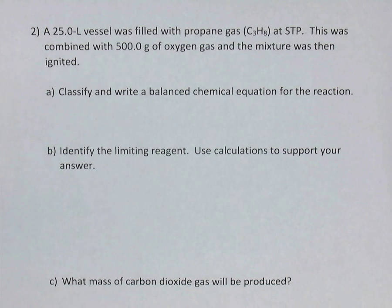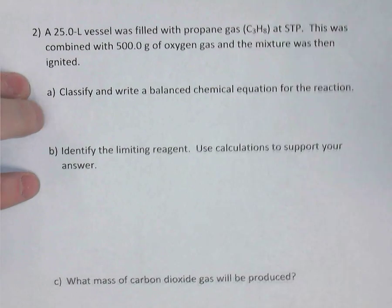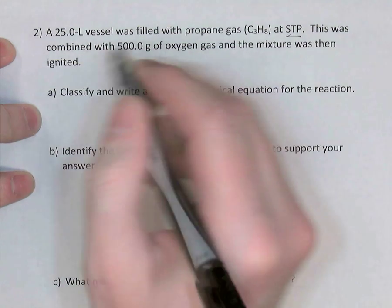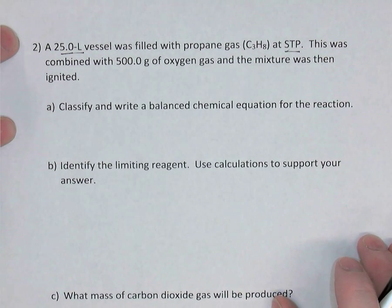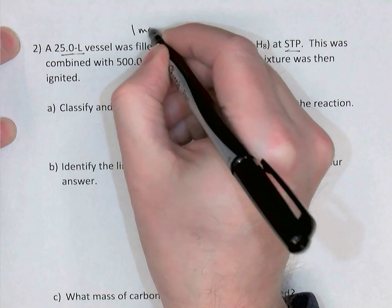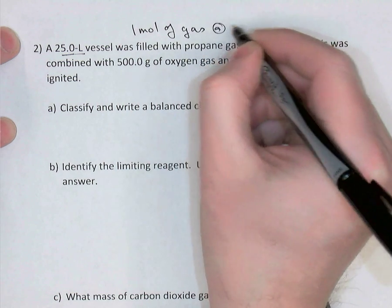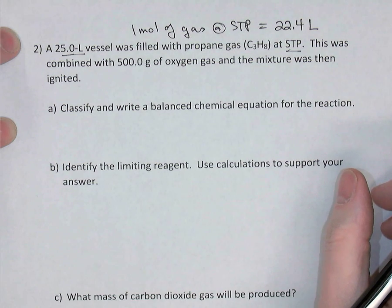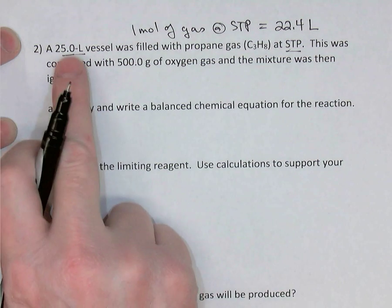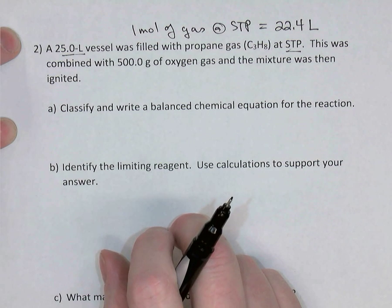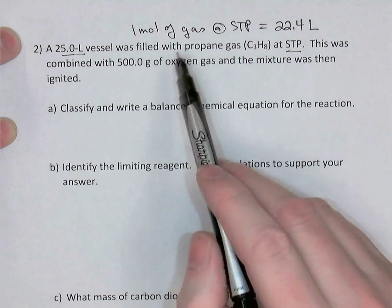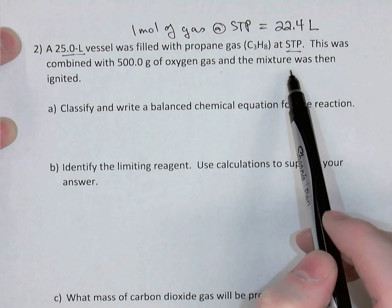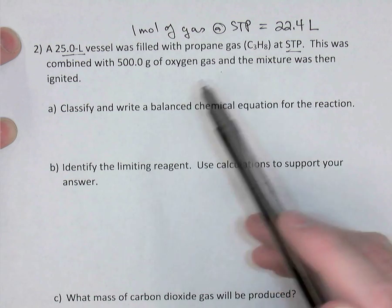A 25.0-liter vessel was filled with propane gas at STP. When I see STP and a volume given, a unit multiplier immediately jumps to mind: one mole of any gas at STP has a volume of 22.4 liters. This amount of propane was combined with 500 grams of oxygen gas and the mixture was ignited. We'll classify and write a balanced equation.